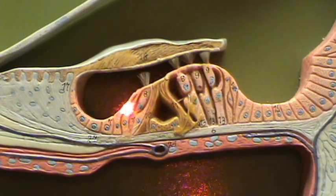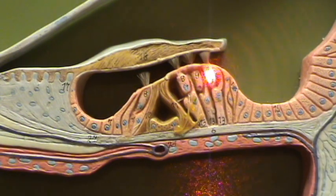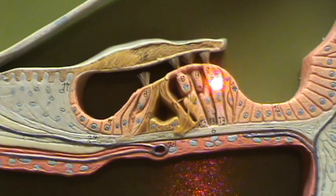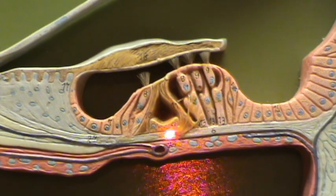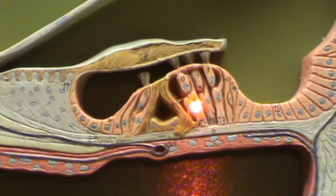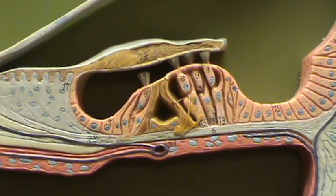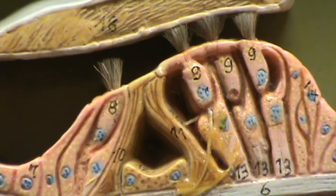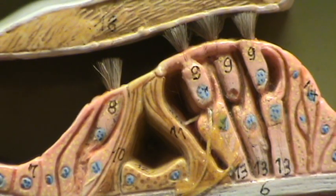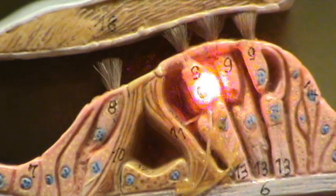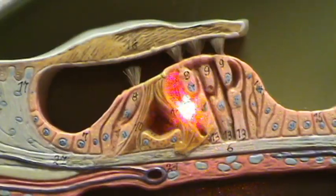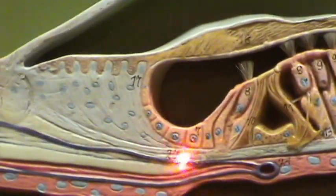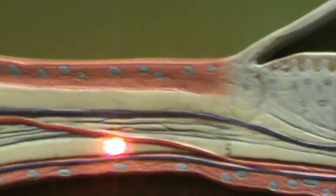So these cells are the transducers which are going to change the vibration of the fluid into electrical impulses that are carried by nerves to the brain. These yellow lines which you see here represent neurons which are responsible for picking up the impulses that are generated in these hair cells as a result of the pressure waves which travel through the fluid. These sensory neurons are then going to travel medially along the basilar membrane.